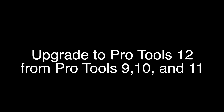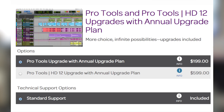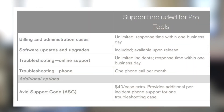Option number four: if you are already a Pro Tools user — Pro Tools 9, 10, or 11 — you can choose the upgrade plan, which is cheaper than renting for a year or for a month, because you've already bought Pro Tools in the past. They're giving you a break here and you pay $200 for the year. You get the same standard tech support as you do in the other two plans.